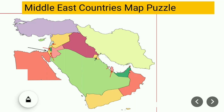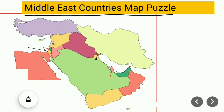Middle East Countries Map Puzzle. Syria — here is Syria.